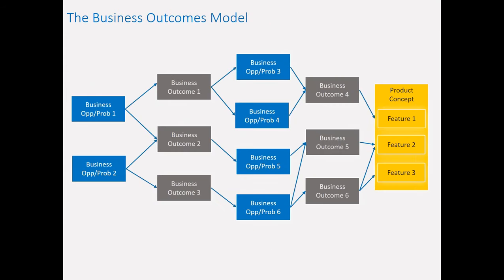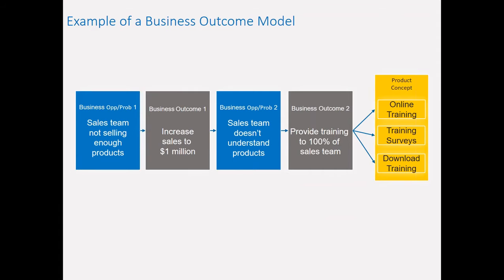Let me dive into the Business Outcomes Model — you may also hear it called the Business Objectives Model; it's the same format and concepts. The full model works as an iterative hierarchy where you move from left to right. On the far left are your top-level problems; next are the top-level outcomes you're trying to achieve; then a subset of deeper problems and outcomes; which ultimately leads to what features you need to build.